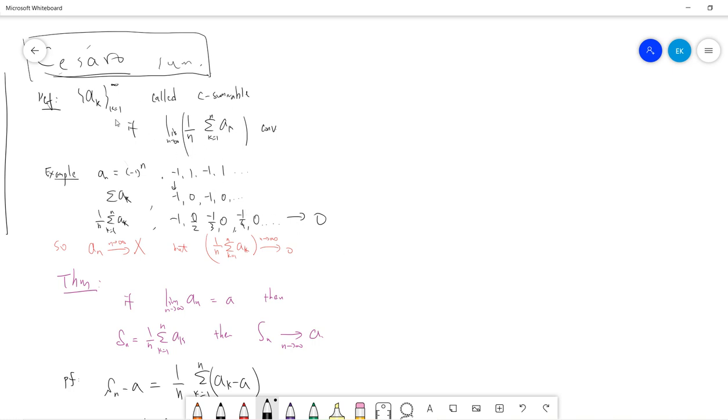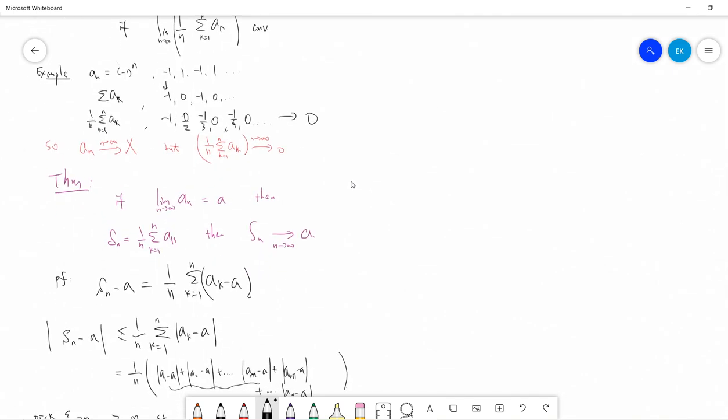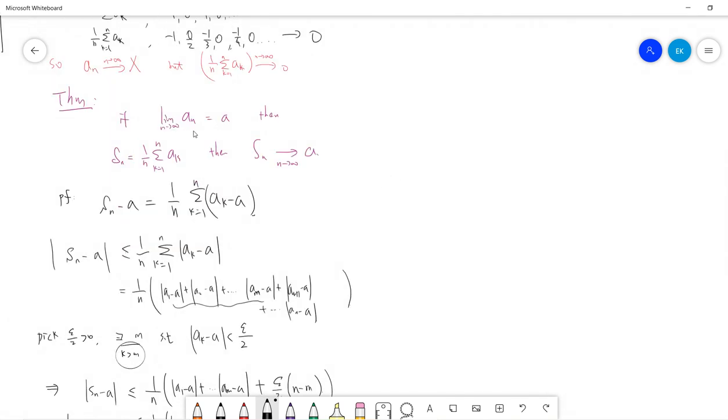Okay, but this, so this idea should coincident with what you already said. If that your original series converged to A, then your Cicero, then this series should be Cicero summable and then it's converged to A, okay?